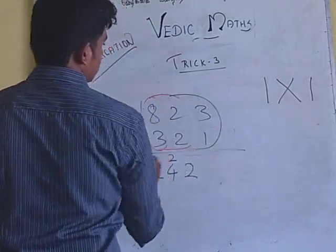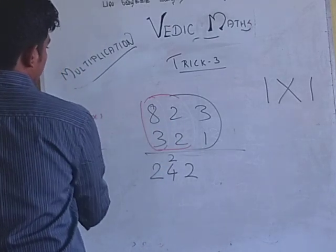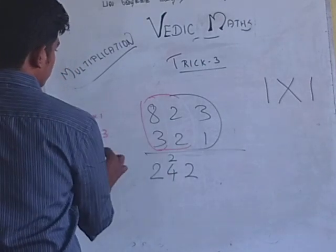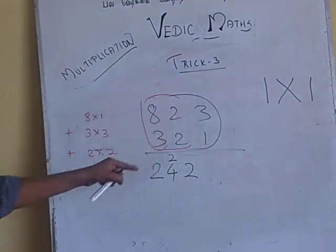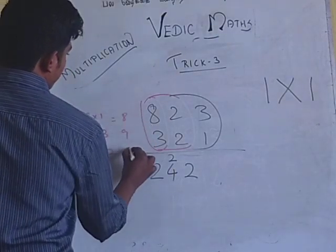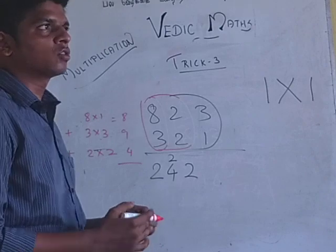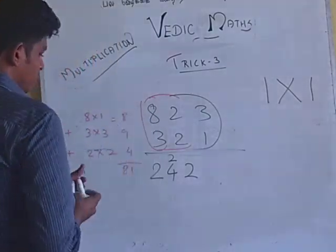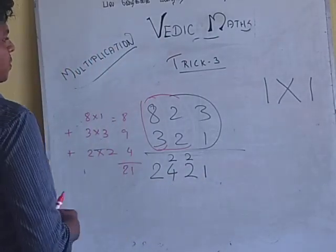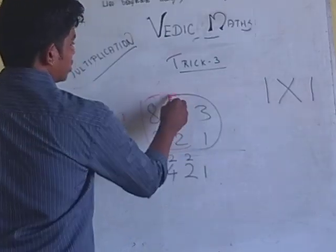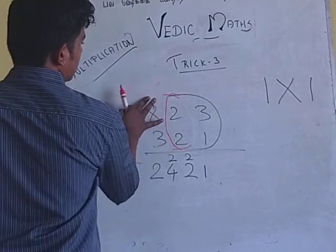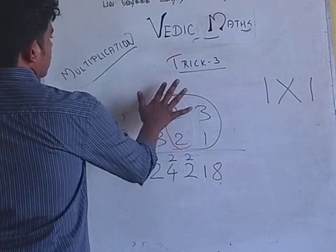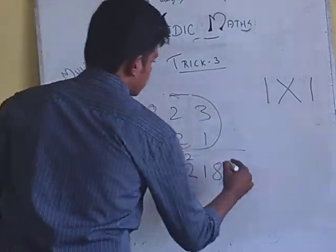If all the 3 digits, is 8 into 1 plus 3 into 3 plus 2 into 2. 8 into 1, 3 into 3 plus 2 into 2. So 21. So 2 as carry and 1 here. If all the 3 digits consume it, if next, in the 2 digits, leaving the first one. 2 times 1 are 2, 3 times 2 are 6. 6 plus 2 is 8. Next, only this is 3 and 1. It comes 3.